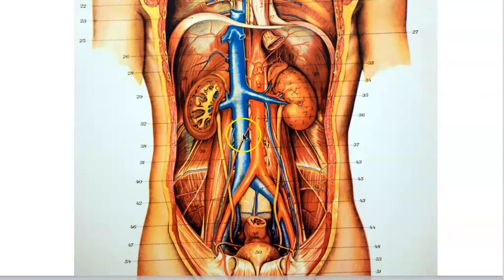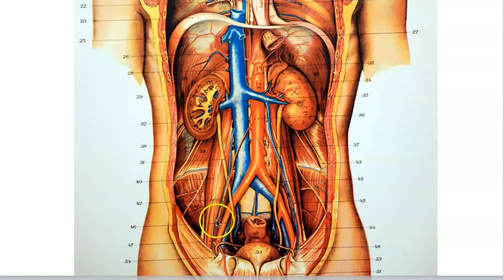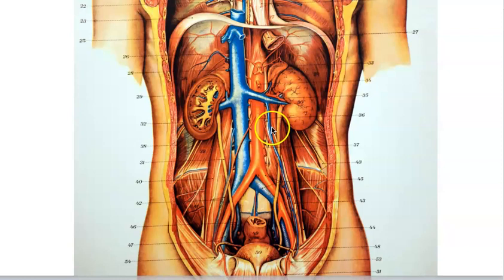There are far fewer structures to know on the inferior vena cava compared to the aorta. First are the gonadal veins. On the right side, the gonadal vein drains straight into the inferior vena cava. On the left side, the left gonadal vein does not go directly into the inferior vena cava — instead it drains into the left renal vein, which then takes blood into the inferior vena cava. The right and left renal veins are also present.